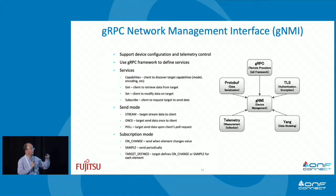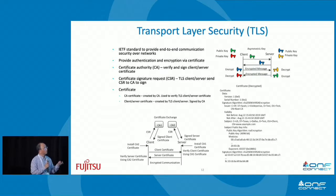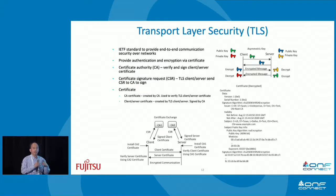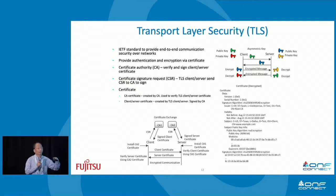GNMI requires mutual authentication, meaning the device authenticates the controller and the controller authenticates the device, using TLS. For encryption, TLS uses asymmetric keys — a public key and a private key. Both the client and server each have a key pair; they exchange public keys. When one side wants to encrypt data to send, it uses the other side's public key to encrypt, and the receiving side uses its private key to decrypt. That's asymmetric key encryption.